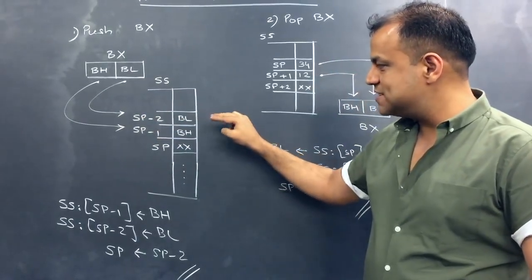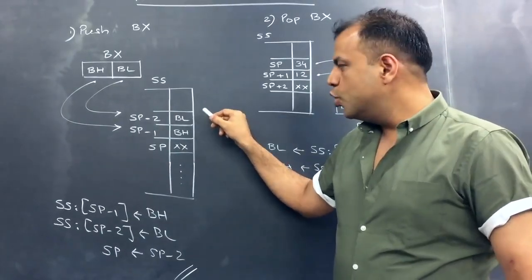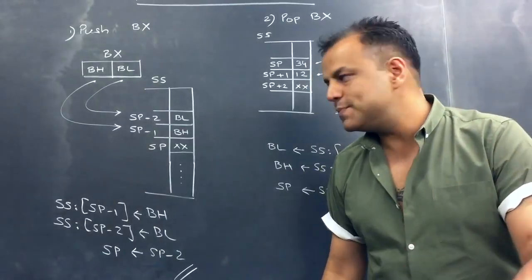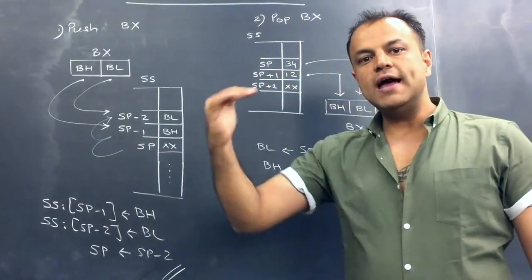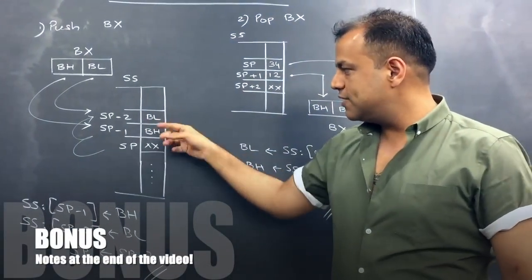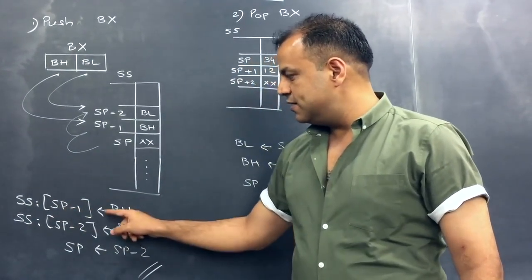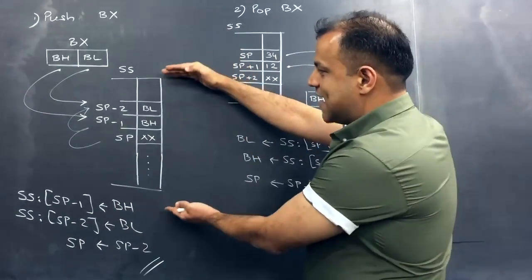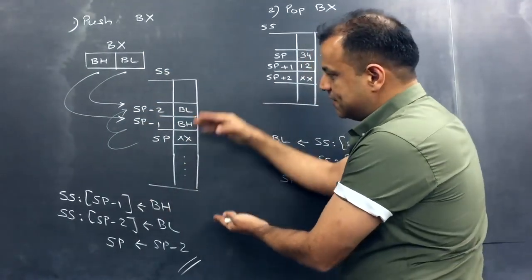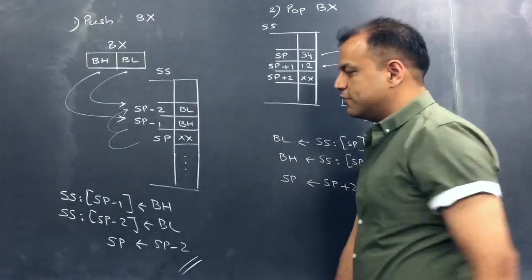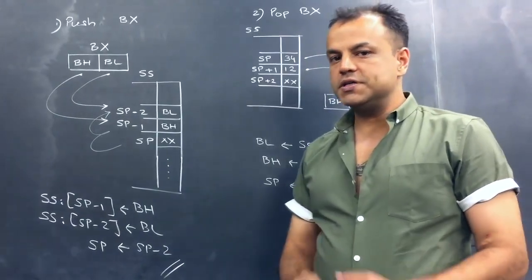Once BH and BL have been pushed, the new top of stack is BL, and SP always points to the top of stack. So SP will become SP minus 2. To write this as steps: SS:[SP minus 1] gets the value of BH; SS:[SP minus 2] gets the value of BL; then SP becomes SP minus 2. That's your PUSH operation.